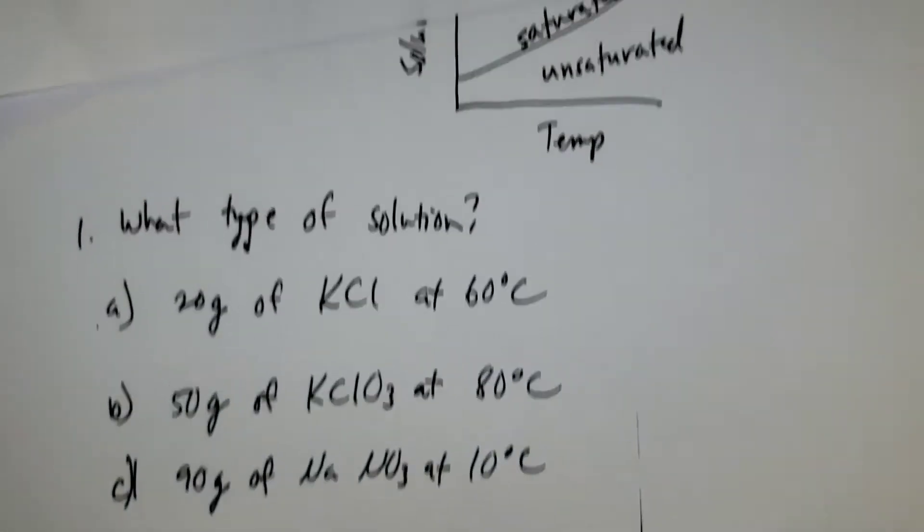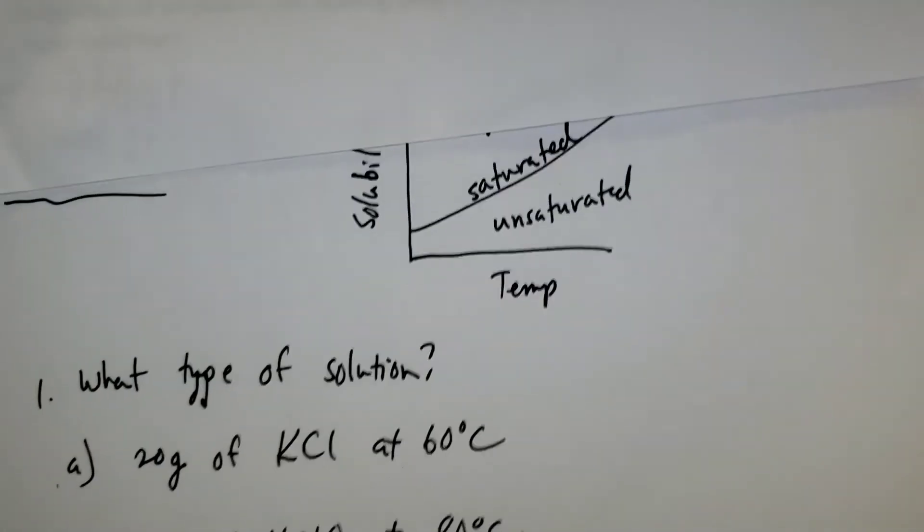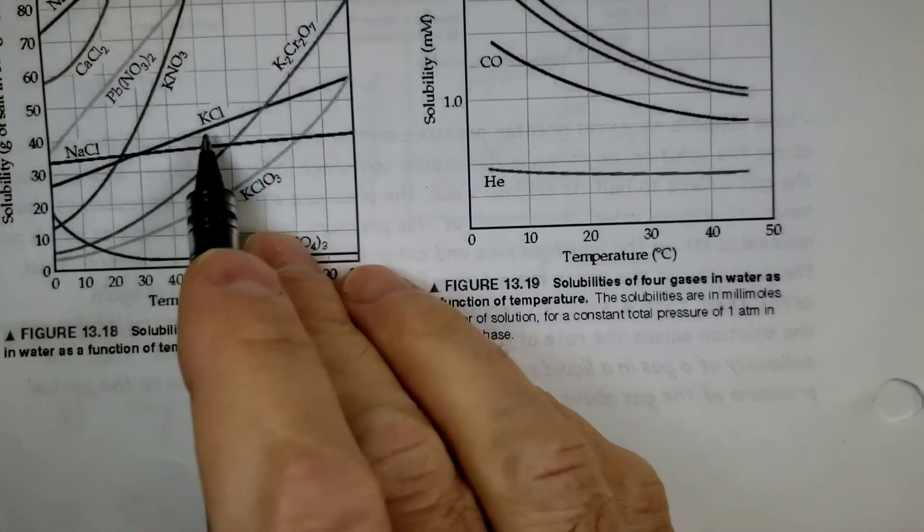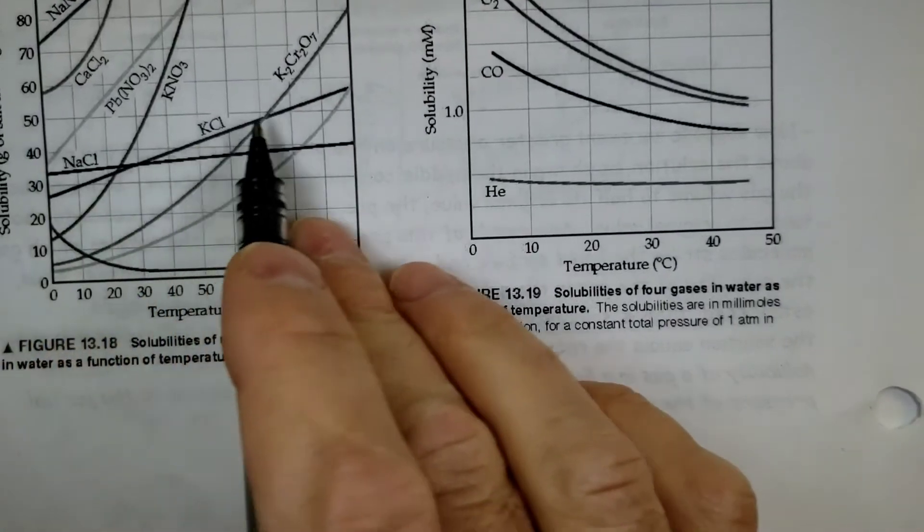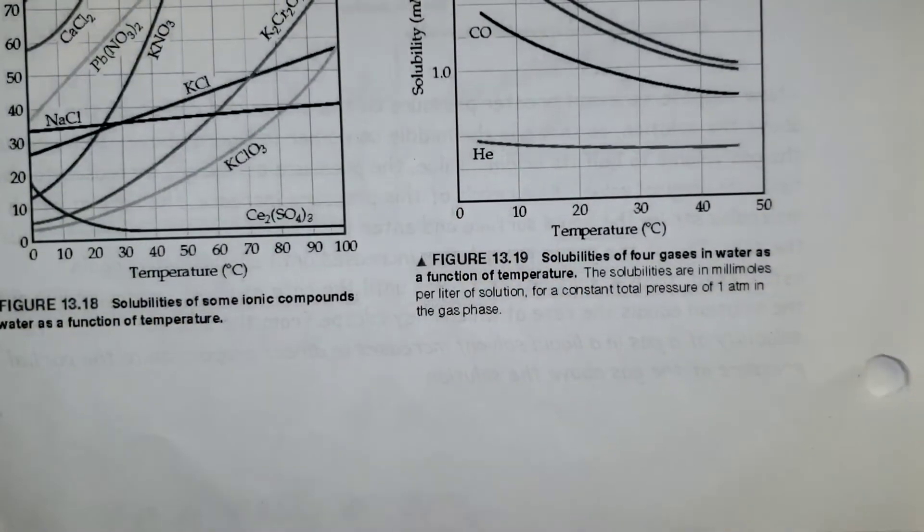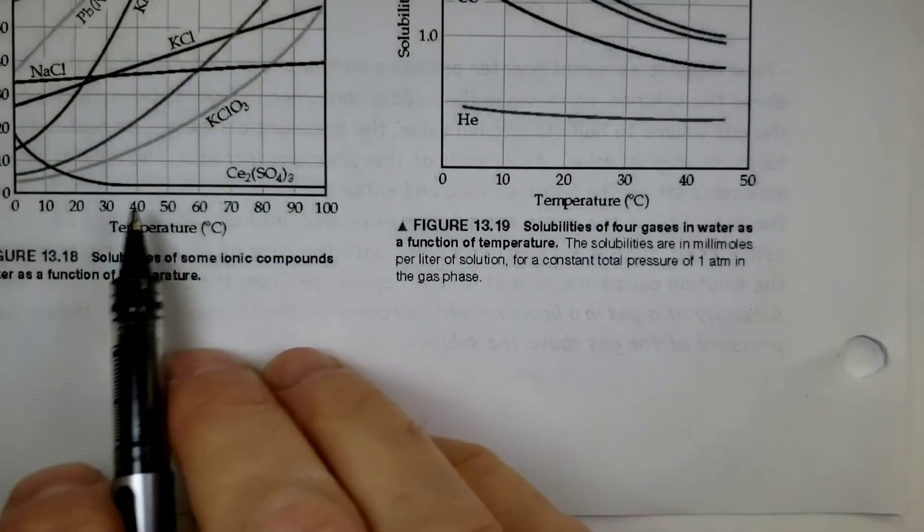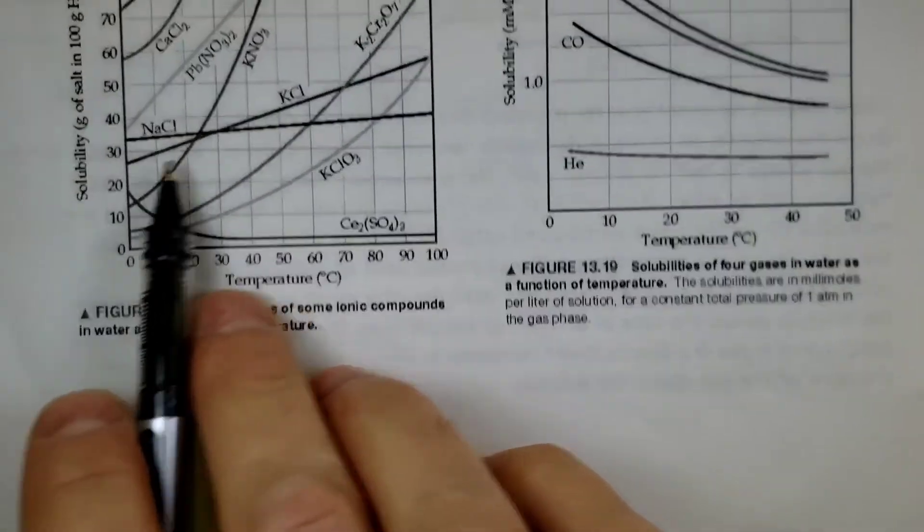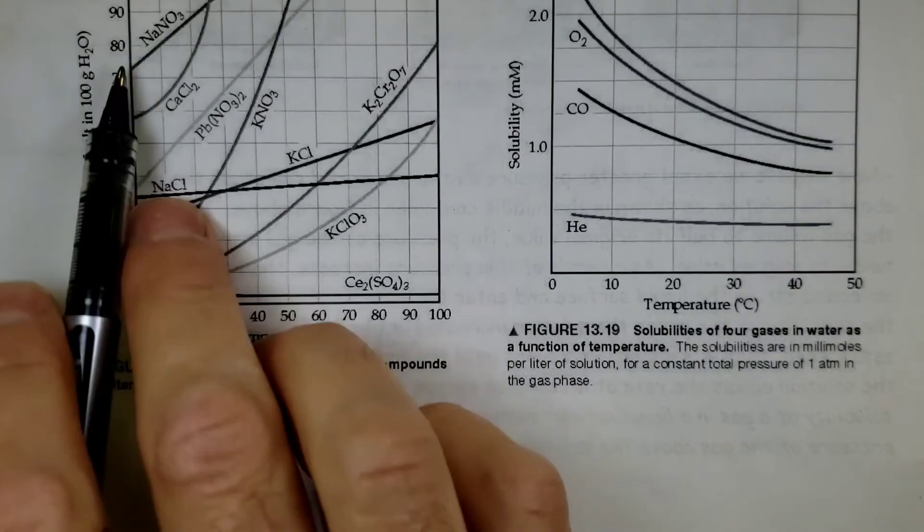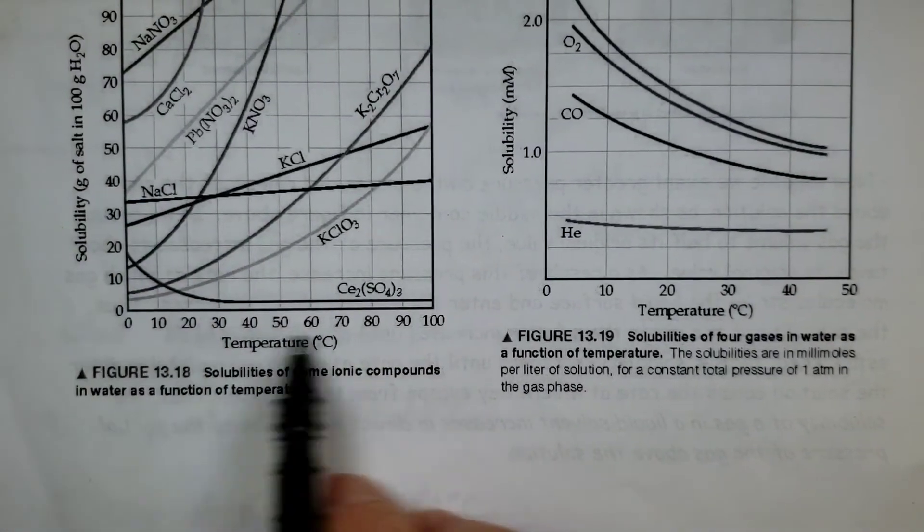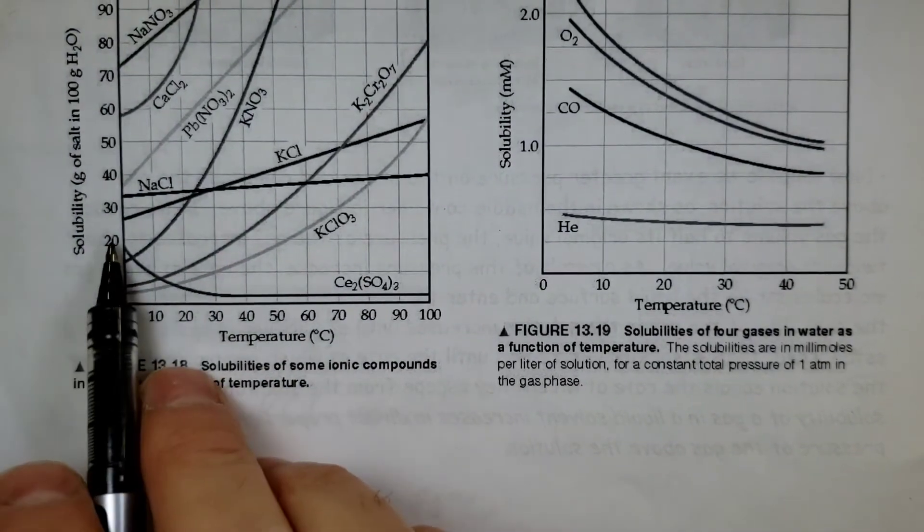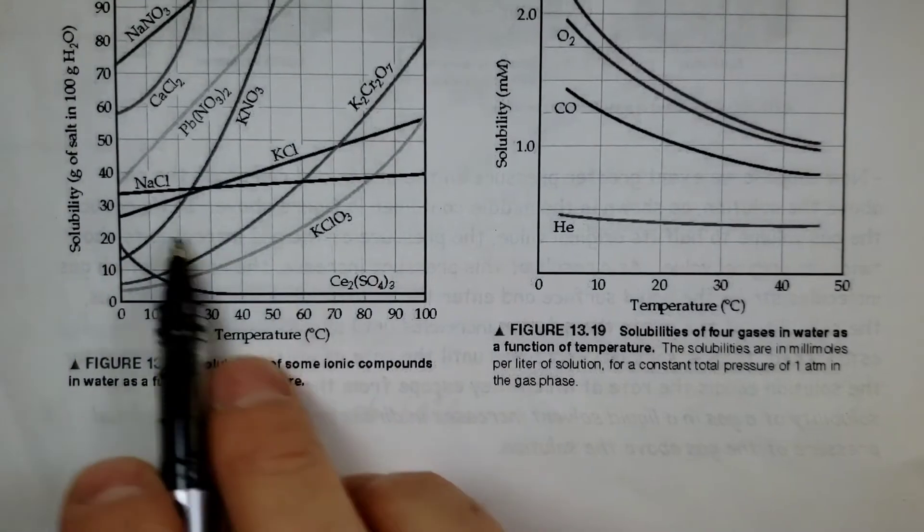So if you had a chance to do that, let's look at the first one. So if I have 20 grams of KCl, so the KCl line is right here. What if I dissolve 20 grams at 60 degrees C? So here is the gram of solute I dissolve, and here's the temperature of the solution. So 20 grams at 60, so let's see where they intersect.